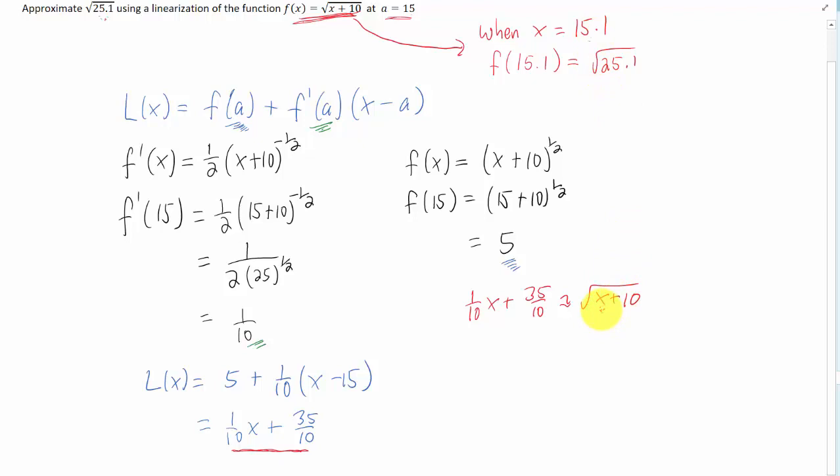So if we want to approximate that value, we can plug x equals 15.1 into our linearization, and that will give us the approximation we need. The notation for that is we're finding l of 15.1. So I plugged x equals 15.1 into our linear approximation. I'm going to switch to decimals here. We get 1.51 plus 3.5, and that turns out to be 5.01.